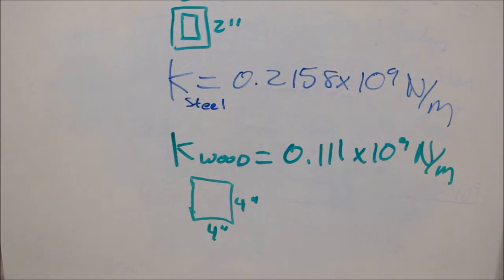And for one of them, it was 0.111 times 10 to the 9 newtons per meter. So this is for a 4x4 post. And then this was for your 2x2 steel tubing. So as you can see, the wood is about half the stiffness of steel.